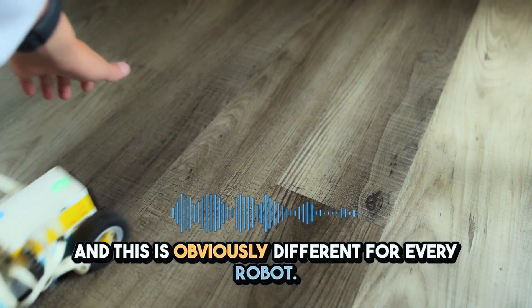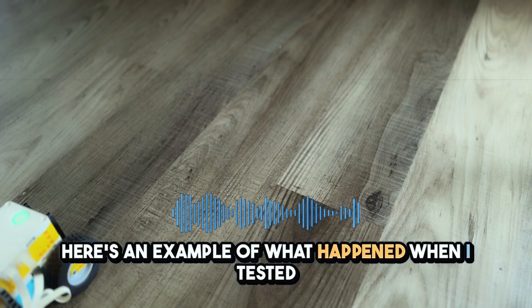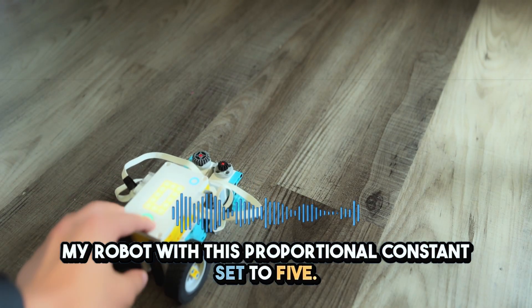Here's an example of what happened when I tested my robot with this proportional constant set to five. As you can see, it did go kind of crazy.